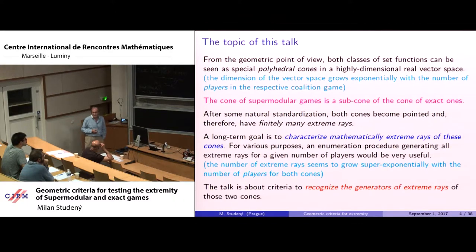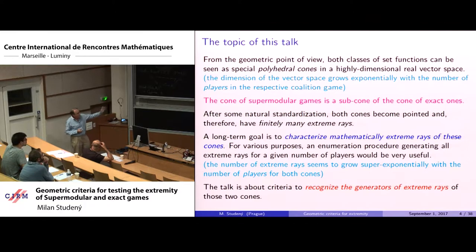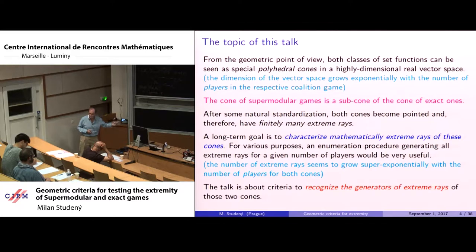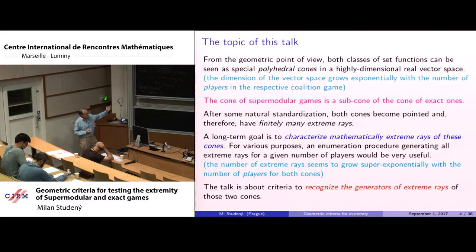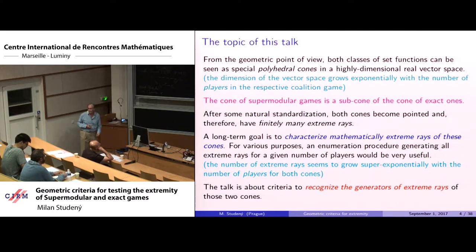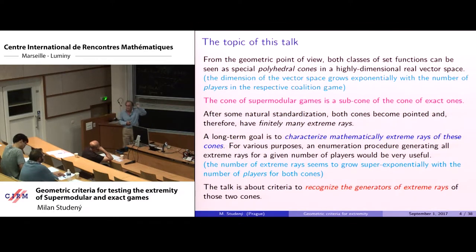Ideally, an enumeration procedure for generating all extreme rays would be suitable. Unfortunately, the number of extreme rays seems to grow super-exponentially. The aim of this talk is not as ambitious as solving that problem, but only to provide a criterion to recognize the generators of extreme rays — so given a supermodular function, we are able to say whether it is extreme or not.